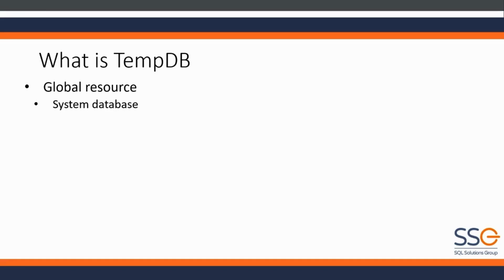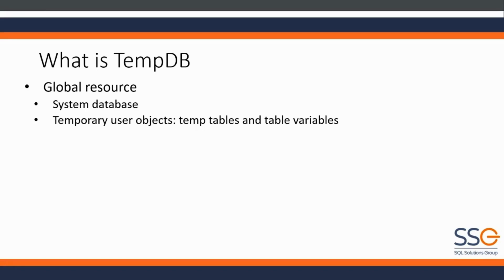TempDB is used for a number of things, but primarily for temporary user objects — when you create a temp table or a table variable, those are stored in tempdb. It also has internal objects like work tables, which store intermediate results for things like cursors, spools, large objects, work files for hash joins, and aggregate operations.